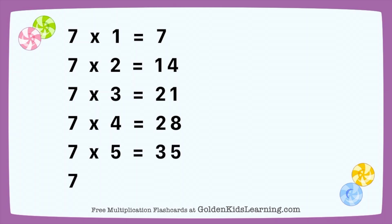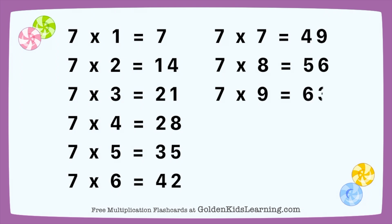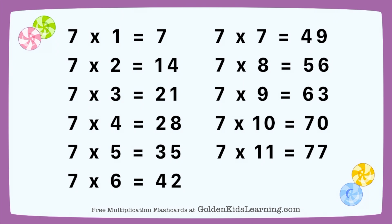7 times 6 equals 42. 7 times 7 equals 49. 7 times 8 equals 56. 7 times 9 equals 63. 7 times 10 equals 70. 7 times 11 equals 77.